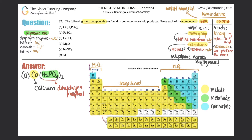That's it — compound A is calcium dihydrogen phosphate. For main group metals, no matter how many of each you have, just state the metal name and then either the polyatomic or the non-metal with the -ide ending.